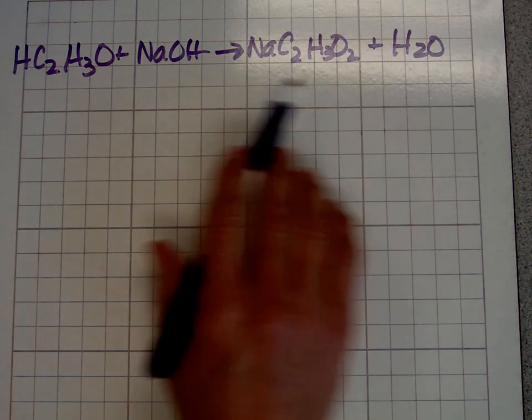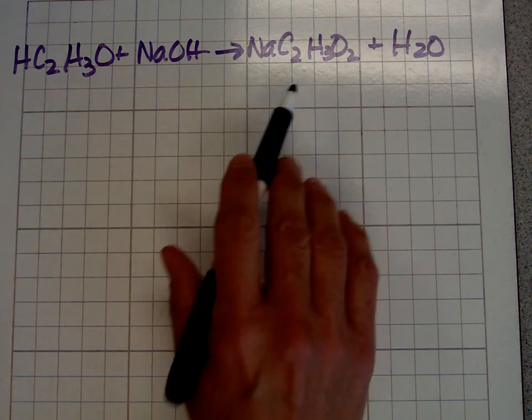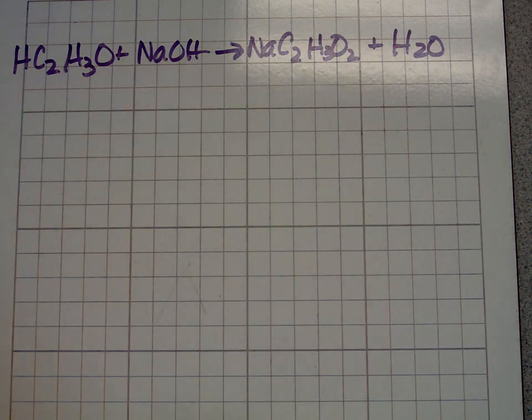As you can see, our equation is balanced right now, and that's important because we're going to be using stoichiometry to figure out the concentration of acetic acid in vinegar. Everyone had different vinegars, so I hope you wrote down what vinegar you used and the percent that was right on the bottle.